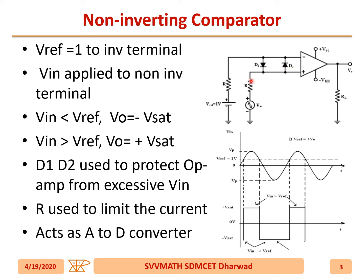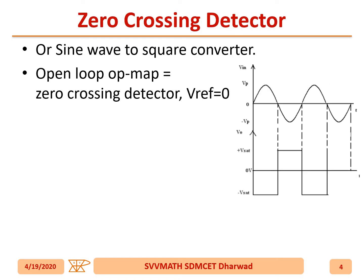R is used to limit the current, and this circuit acts as an analog-to-digital converter. A zero crossing detector is also called a sine wave to square wave converter. An open-loop op-amp can be called a zero crossing detector when V_reference is given as zero volts.